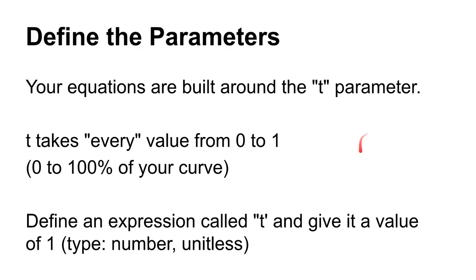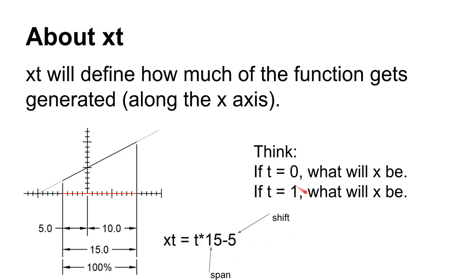The only thing you really need to know about t is that you're going to set t equal to 1. As NX iterates and solves your law curve, it will take t and assign it every value from 0 to 1 — so t goes from 0 to 100% of your curve. The best thing to do is create an expression called t and give it a value of 1, and then you'll use it inside of xt.